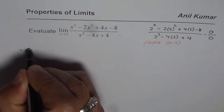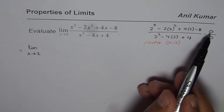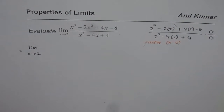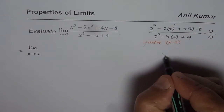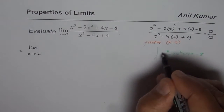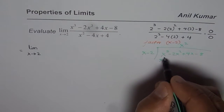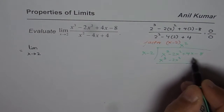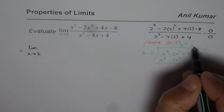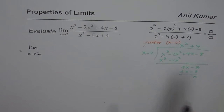We rewrite the question as the limit as x approaches 2. Since we got 0 in the numerator, we know x minus 2 is a factor. We divide x cubed minus 2x squared plus 4x minus 8 by x minus 2 using long division. Multiplying by x squared gives x cubed minus 2x squared, remainder 0. Bringing down 4x minus 8, multiplying by plus 4 gives 4x minus 8. The remainder is 0, so x squared plus 4 is the other factor.